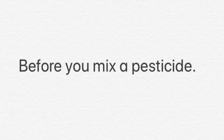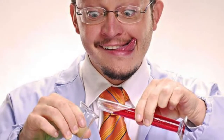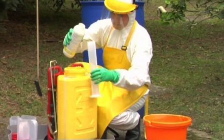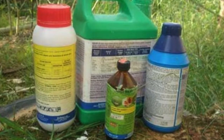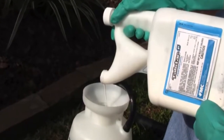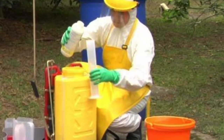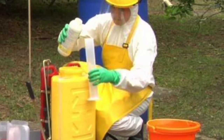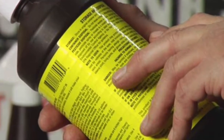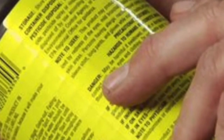Before you mix a pesticide, you should always read the label to determine: What type of protective equipment should you use? With what can the pesticide be mixed? How much pesticide should you use? And what is the mixing procedure? All of these things can be found by reading the label.